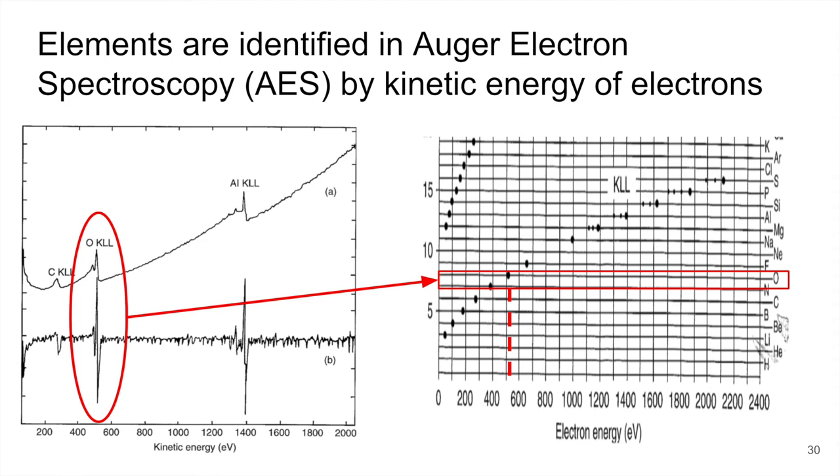So again, though, for Auger electron spectroscopy, or AES, we typically look at kinetic energy of the electron, not binding. And so that's why we often see these spectrums in kinetic energy. So that's a big difference between those two, we can convert back and forth very easily. But if you see it presented in kinetic energy, we're talking about Auger electrons.